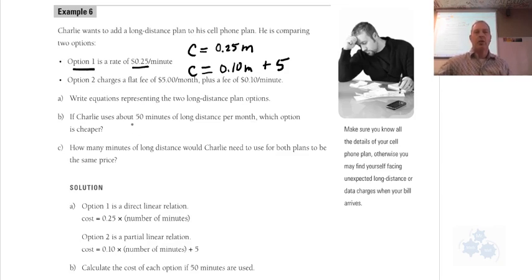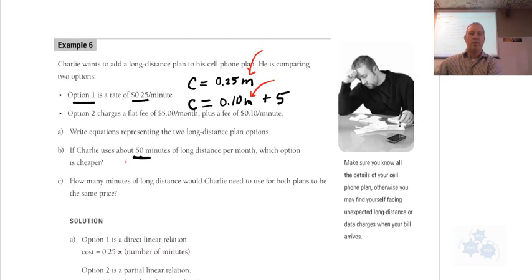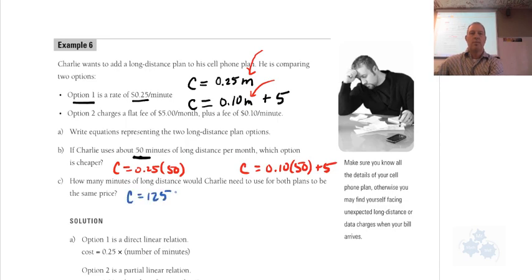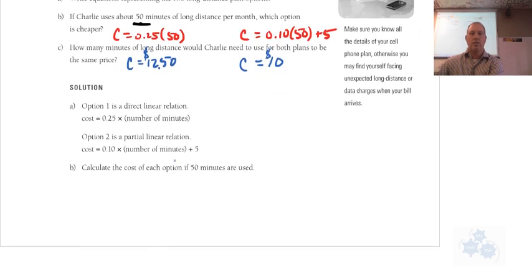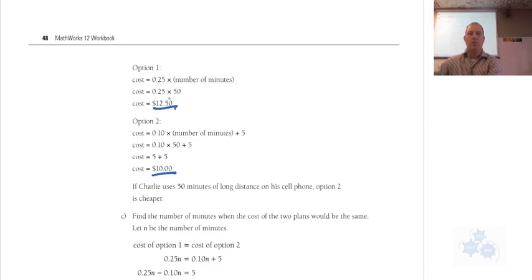If Charlie uses 50 minutes of long distance per month, which option is cheaper? We plug 50 into M for both equations. Option one: C equals 0.25 times 50, that's $12.50. Option two: C equals 0.10 times 50 plus 5, that's $10. So we plug our number of minutes into each equation and quickly calculate the cost. Option two is cheaper at 50 minutes.